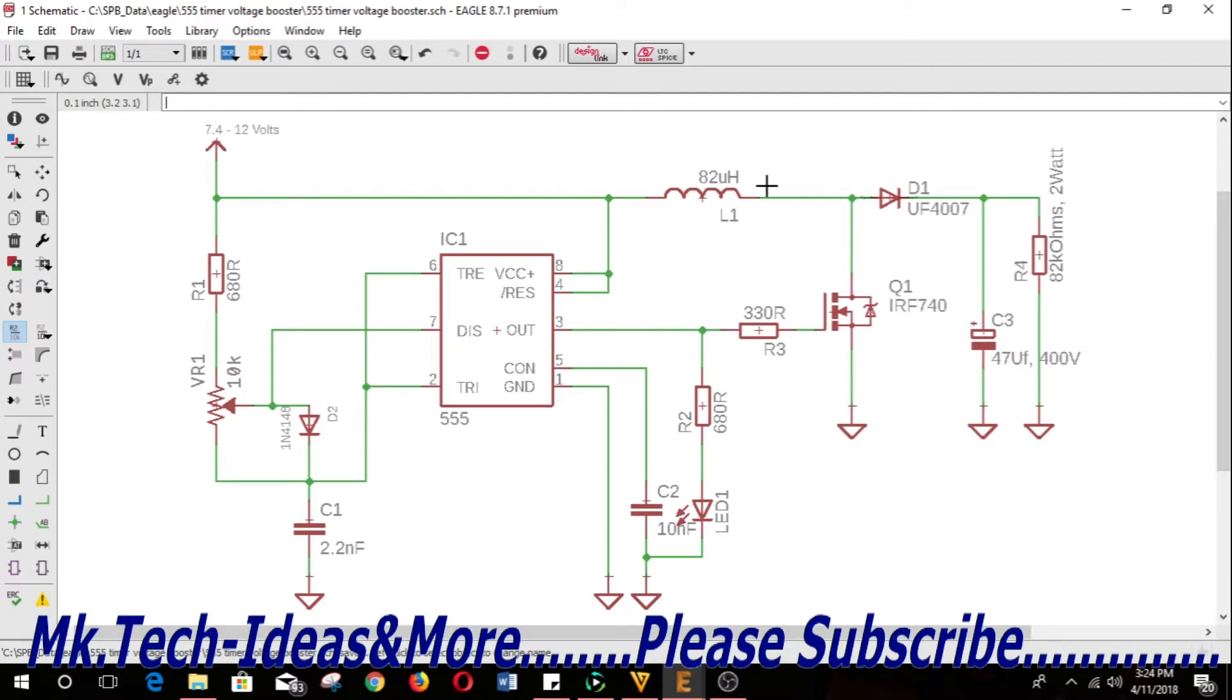When it goes high, the MOSFET is on and it allows current to flow from the power supply through the inductor to ground for a brief moment, and the magnetic field in the inductor will build up.